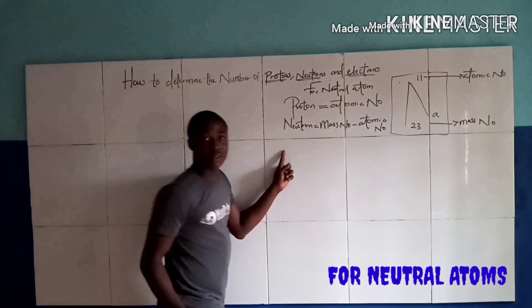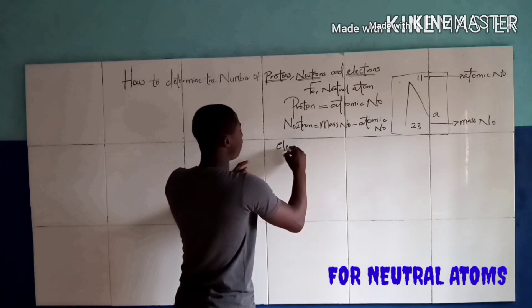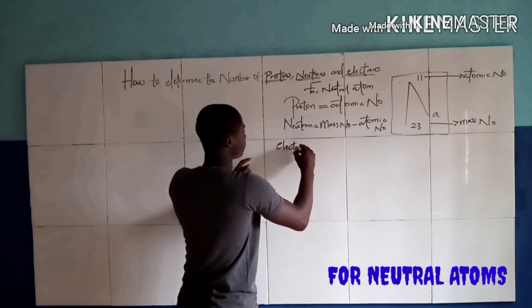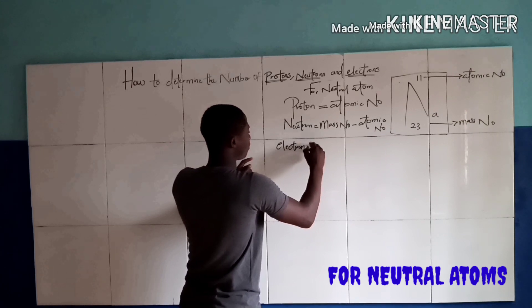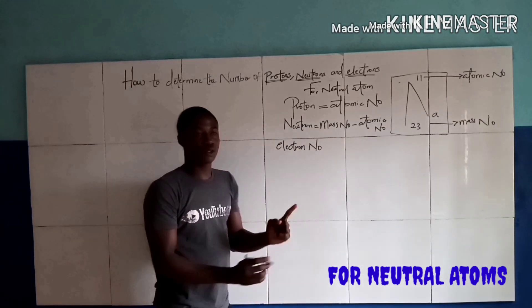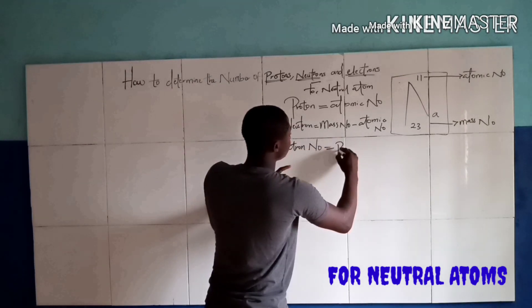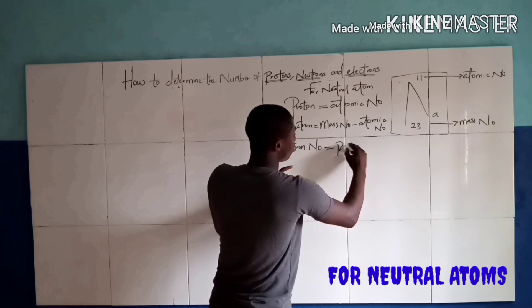Lastly, the electron number for a neutral atom is the same as the proton number.